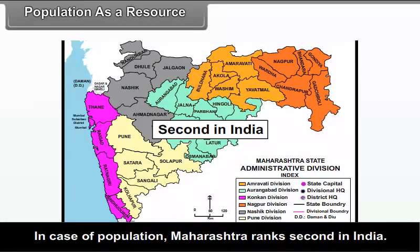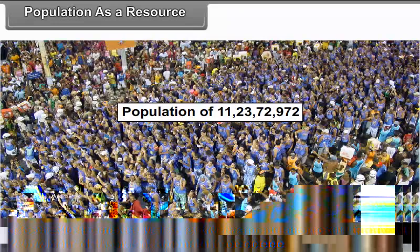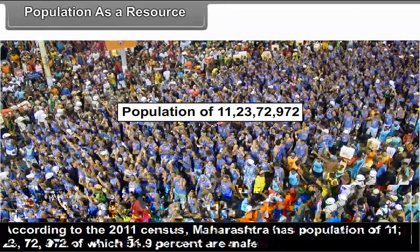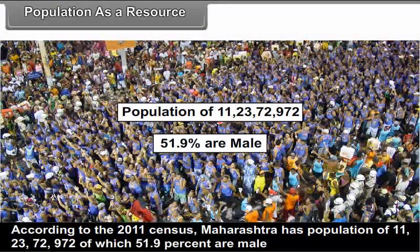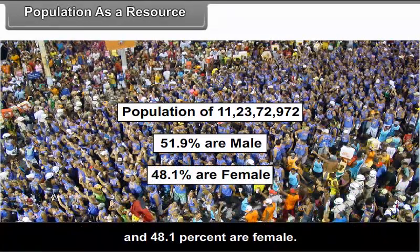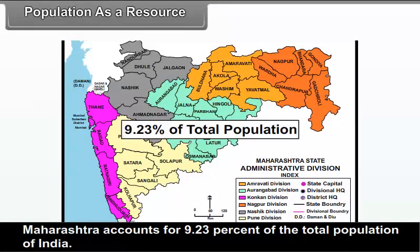In the case of population, Maharashtra ranks second in India. According to the 2011 census, Maharashtra has a population of 11 crores 23 lakhs 72 thousand 972, of which 51.9 percent are male and 48.1 percent are female. Maharashtra accounts for 9.23 percent of the total population of India.